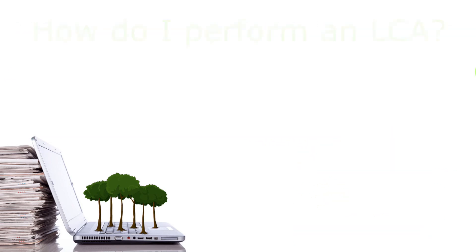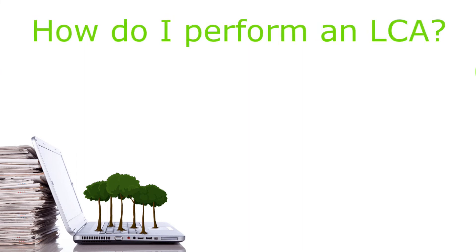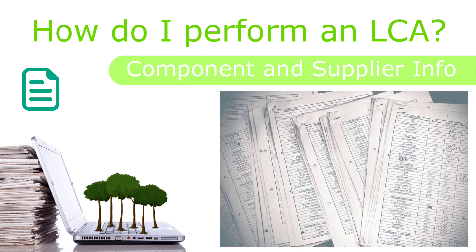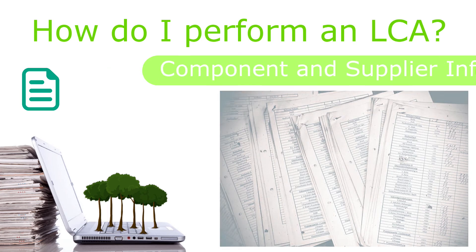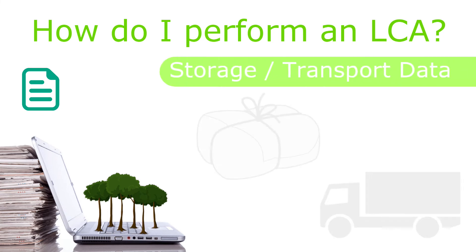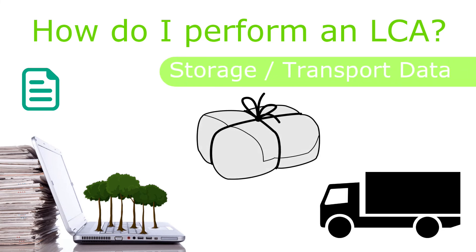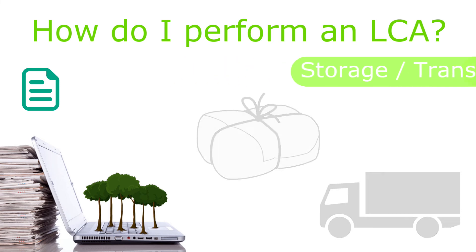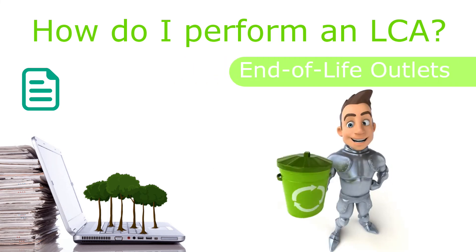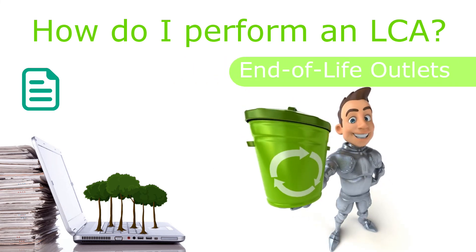If you have a product that needs assessment, here are some examples of things you'll need: a bill of materials with as many supplier details as you can collect; shipping and packaging information, including the cost of warehousing and internal transport; and channels for the product's end-of-life — this means any plans in place for recycling, recovery, and disposal.